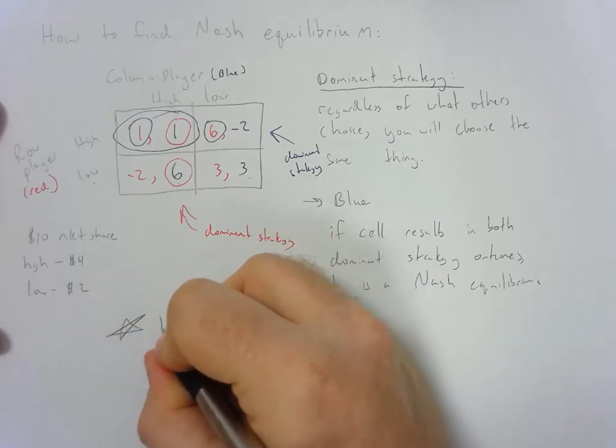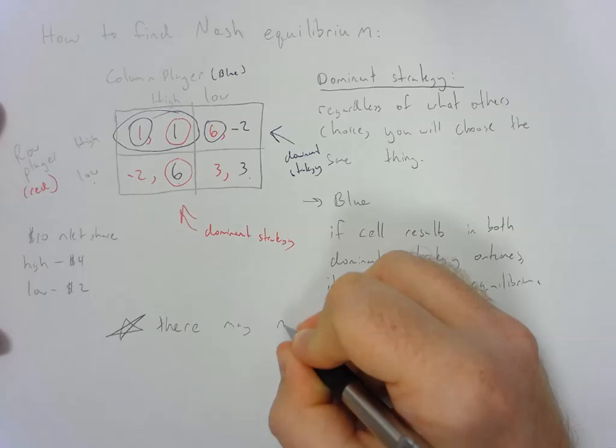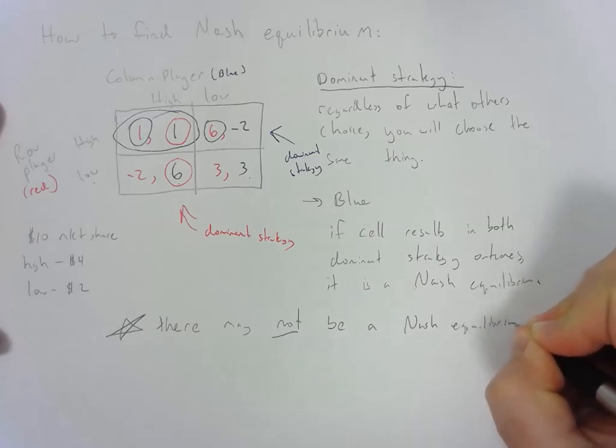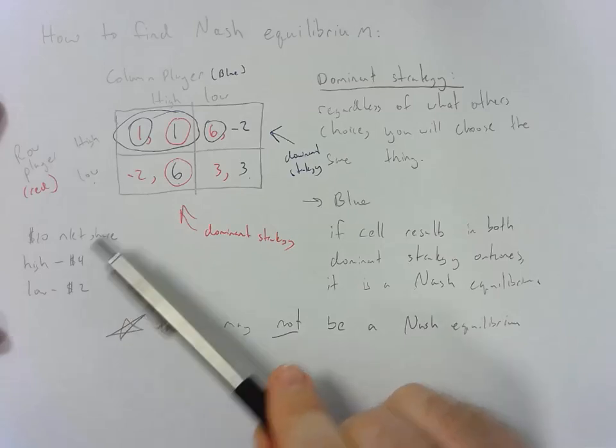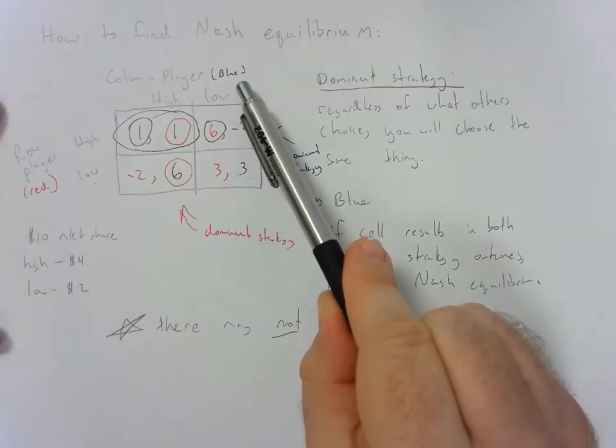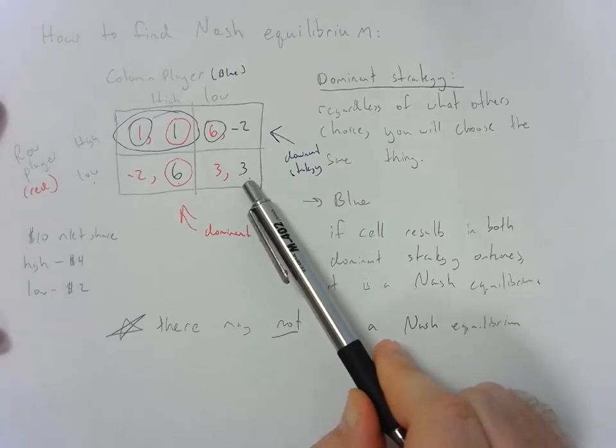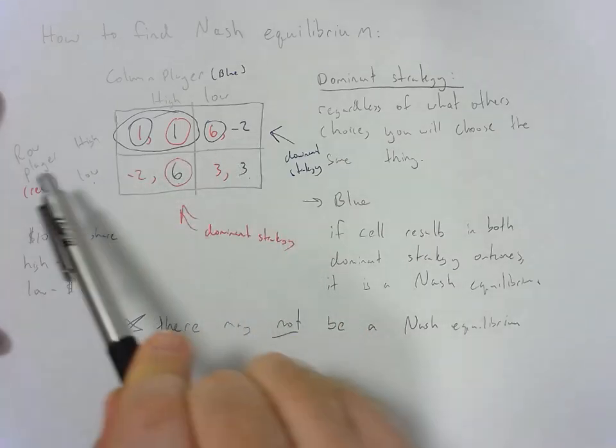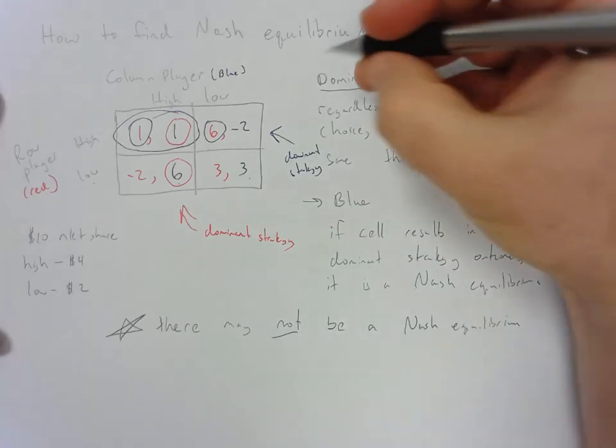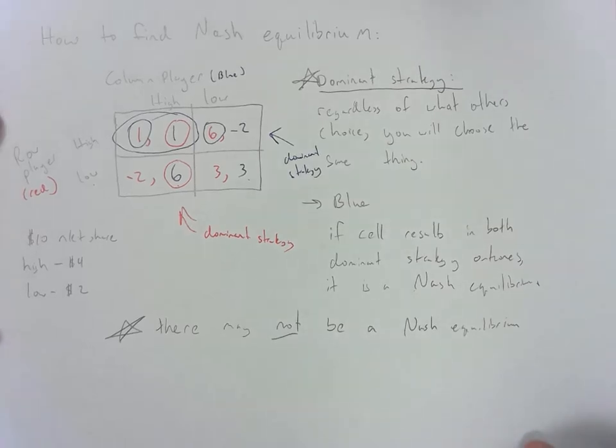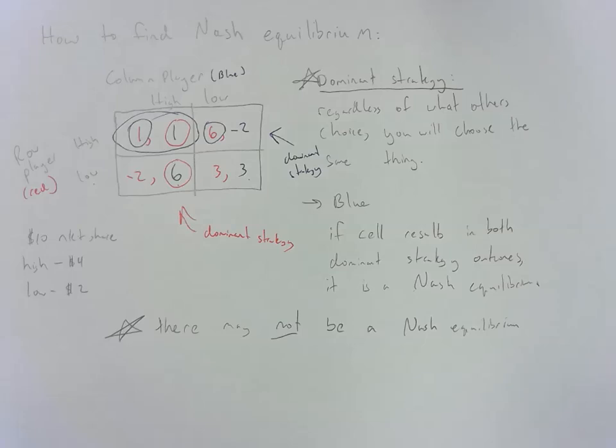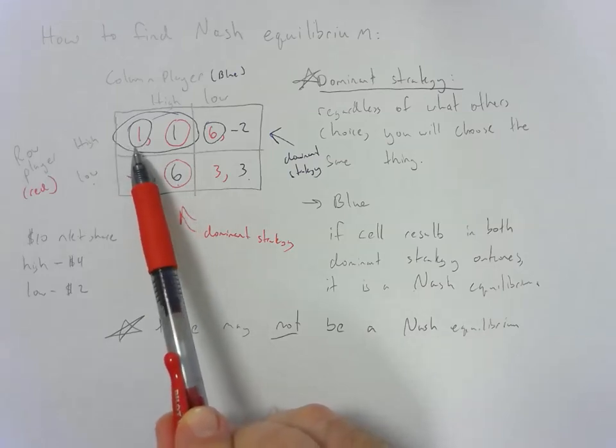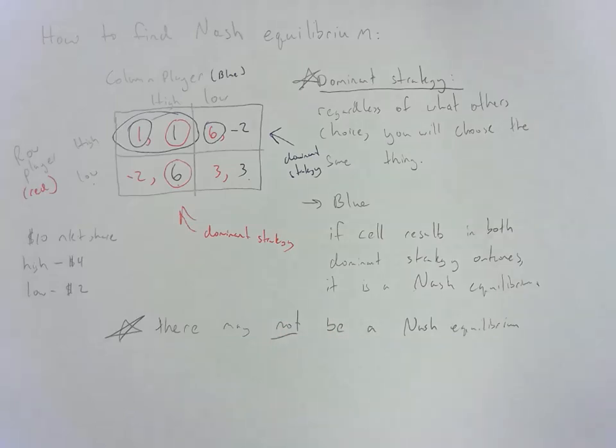Now, there are some caveats. There may not be a Nash equilibrium. Imagine I changed some of these values around and the dominant strategy for the column player was low. So then what would happen in this situation is that the Nash equilibrium would change potentially based on what the values were and what the row player ended up deciding to do. So in order for this strategy to make sense, or in order for there to be a Nash equilibrium regardless, both of the players have to have a dominant strategy, and that dominant strategy has to result in them both getting that stable cell.